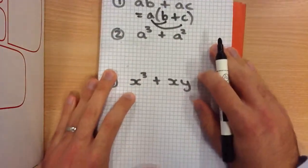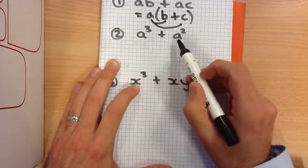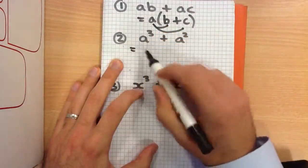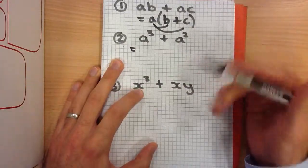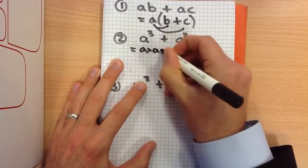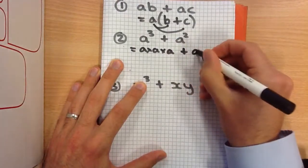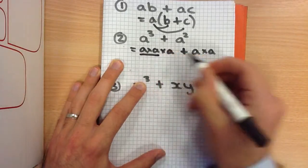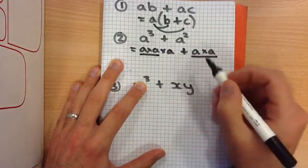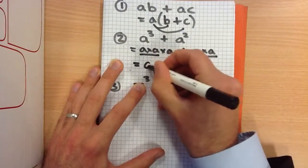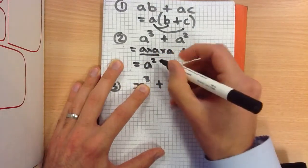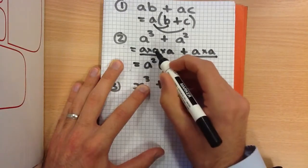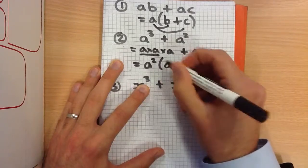This second example is perhaps a little bit trickier: A cubed plus A squared. What's in both bits? If you think about it, A cubed means A times A times A, and A squared means A times A. So what I can see in both bits is A times A — that's A squared. So that is our common factor. A squared times something is A cubed; well, A times A is A squared, so times that by one more A and I get A cubed.